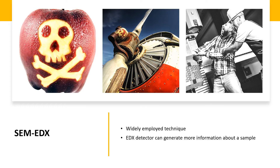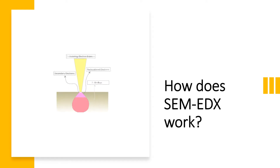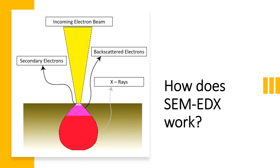But how exactly does EDX work? With an SEM, a variety of signals offer different information about a given sample. For example, backscattered electrons produce images with contrast that carry information about differences in atomic number, while secondary electrons produce topographic information about the sample. When an SEM is joined with an EDX detector, X-rays can also be used as a signal to produce chemical information.